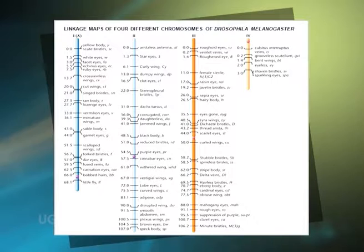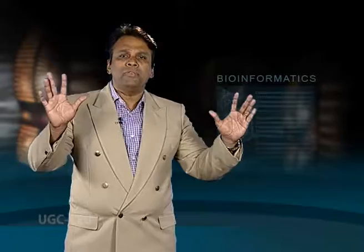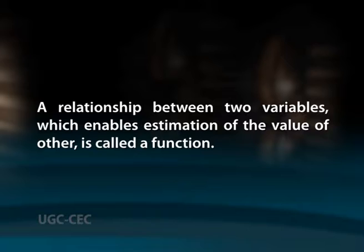The X chromosome has 66 crossover units, with genes yellow and bobbed being 66 units apart. In fact, we know that recombination frequency will never exceed 50% between any two loci. These 66 units are actually obtained by making use of a mapping function. A mapping function is the relationship between two variables which enables estimation of the value of one from the value of the other. The relationship between real map distance and recombination frequency is called the mapping function. It is thus evident that we should not confuse map distances with recombination frequencies.